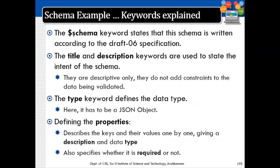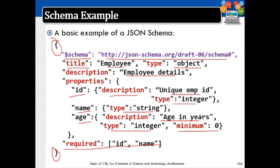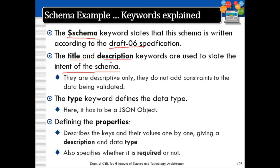The $schema keyword states that the schema is written according to the draft-06 specification. The title and description keywords state the intent of the schema — they are descriptive only and do not add constraints to the data. The type keyword defines the data type. Defining properties describes the keys and their values one by one, with a description and data type, and specifies whether each property is required or not.